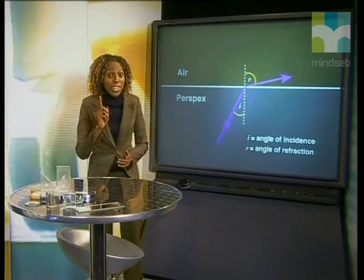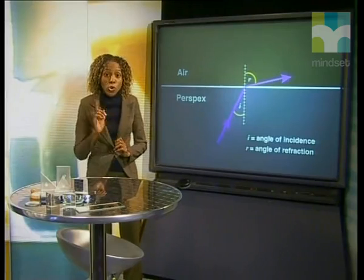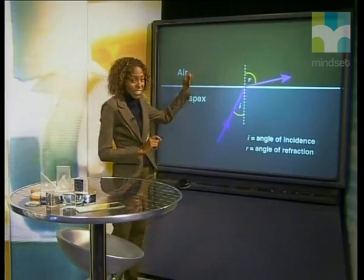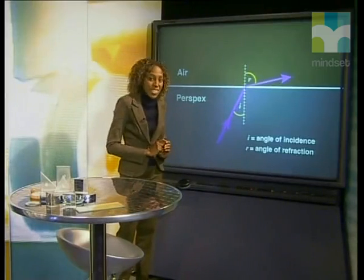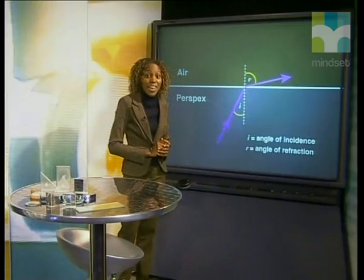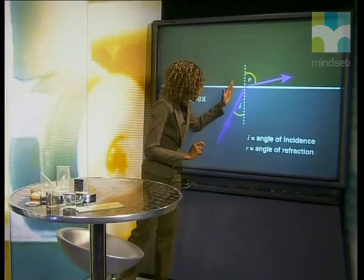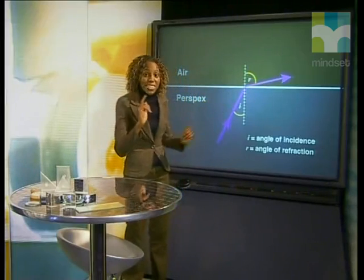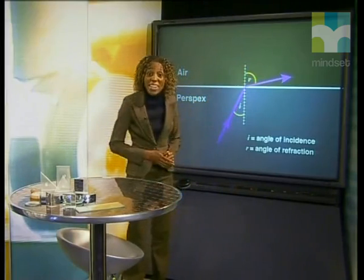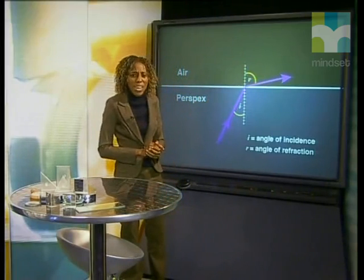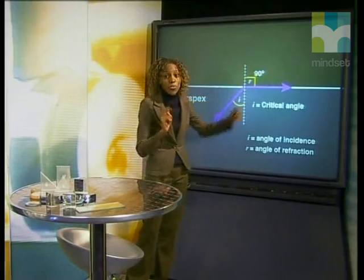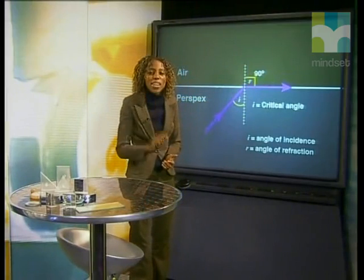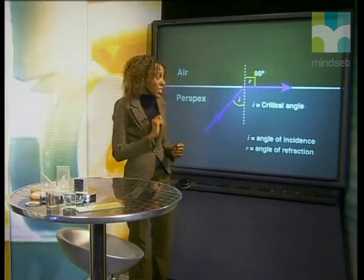Let's go back to the studio to draw ray diagrams illustrating what we have just seen. We are only going to draw what happens at the boundary between the perspex and the air. When the light hits the boundary at an angle of incidence less than the critical angle, the light is refracted away from the normal because light speeds up. If the light hits the boundary at an angle equal to the critical angle, it is still refracted away from the normal but so far that it runs parallel to the boundary.